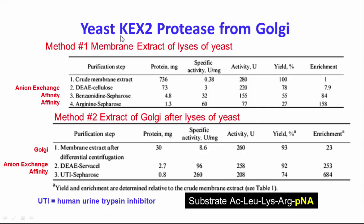Here's an example of two methods for purification of the Kex2 protease found in the Golgi of yeast. In method one, yeast were lysed and membranes extracted, giving a crude membrane extract with 736 mg total protein and a specific activity of 0.38 — this is defined as 100% yield and 1-fold enrichment. DEAE cellulose anion exchange enriched it about 8-fold, increasing specific activity to 3. Benzamidine affinity and arginine Sepharose affinity steps then gave a final specific activity of about 60, with 1.3 mg protein and 158-fold purification.